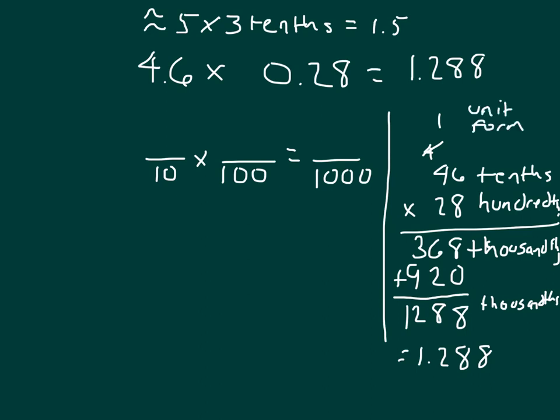That was the unit form approach. If we were to use the fraction approach, we should come to that same answer. 4.6 is equal to 46 tenths. 0.28 is equal to 28 hundredths. We're multiplying those two numbers, 46 times 28, just as we had done before. If we do that again and come to that same answer, then it is likely that we did not make a mistake.